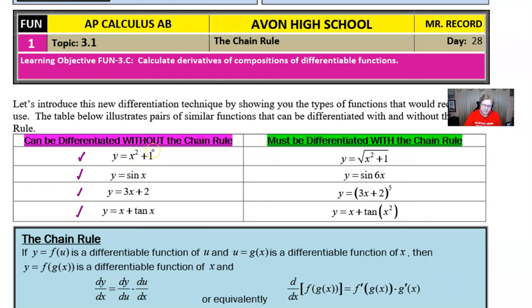For example, placing square roots over x² + 1, this needs the Chain Rule. Taking the sine of some value of x besides just x, maybe like a 6x, is going to require a Chain Rule. Taking 3x + 2 and raising it to some power, now it can be done with the Chain Rule and it's actually quite easy to do with the Chain Rule.